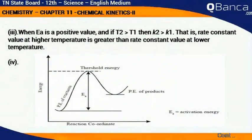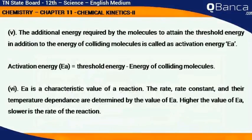When Ea is positive and if T2 is greater than T1, then K2 is greater than K1. That is, the rate constant value at higher temperature is greater than the rate constant value at lower temperature.